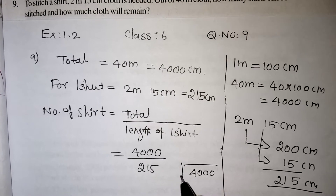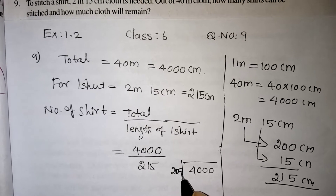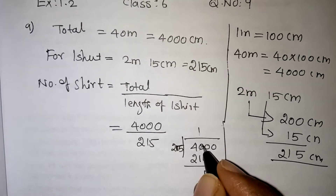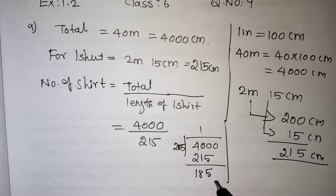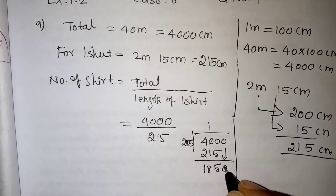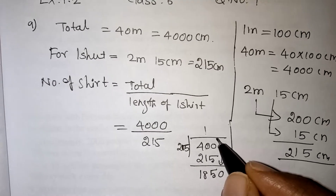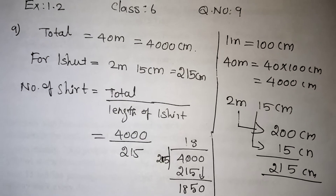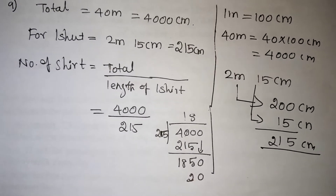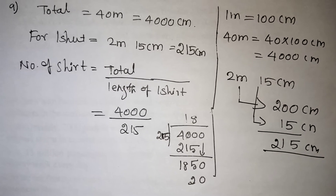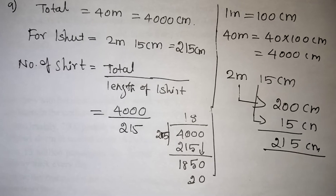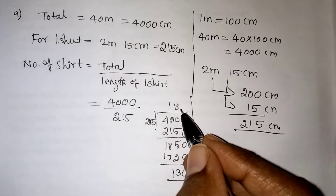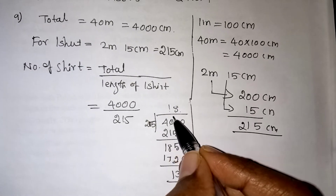We are dividing 4000 by 215. One time 215, remainder — working through the long division: taking 8 times, 8 fives are 40, and continuing the calculation. The quotient we are getting is 18, with a remainder of 130.